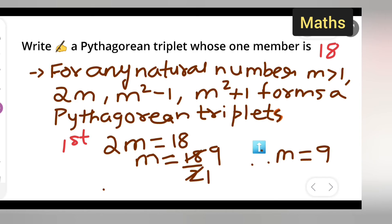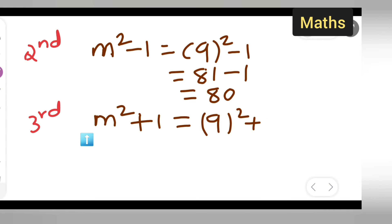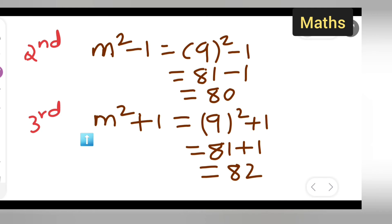The third Pythagorean triplet is m²+1. With m = 9, we get 9² + 1 = 81 + 1 = 82. So the three members are 18, 80, and 82.